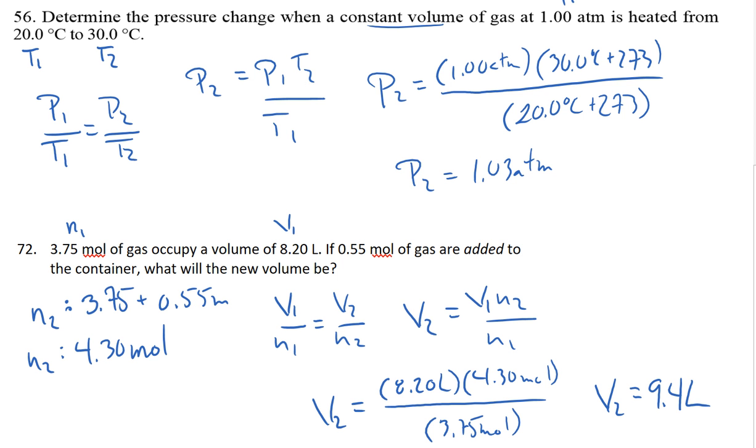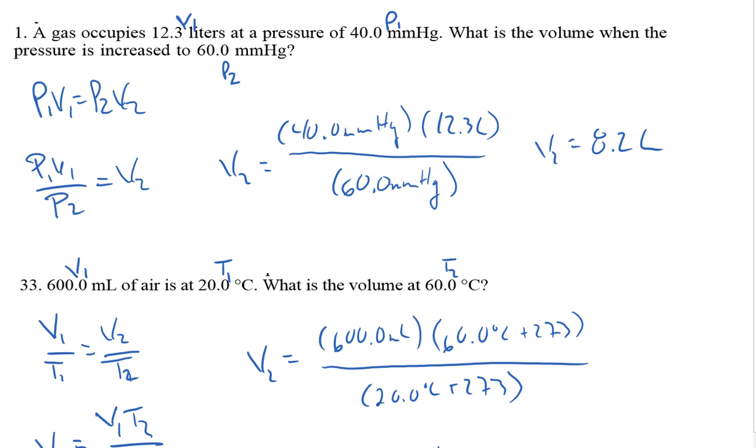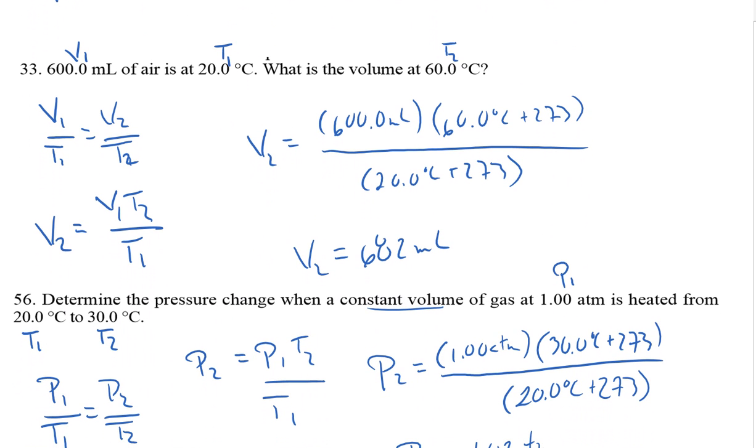Notice that in all four problems, I followed the same pattern. I identified my variables, used those variables to help determine what equation I was looking at, made a prediction based on the relationship between the variables as to whether my answer should be bigger or smaller, greater than or less than the initial condition, isolated the variable I wanted to solve for, plugged in some numbers, and then solved. Notice as well that writing out all of the equations, writing out the numbers, and including units was helpful in keeping the work organized.